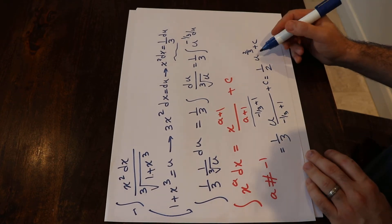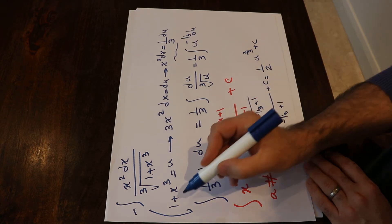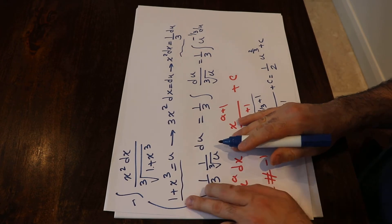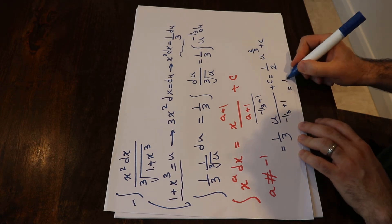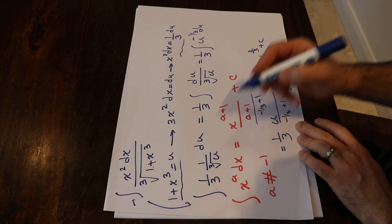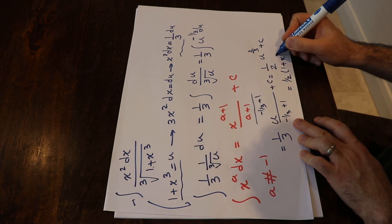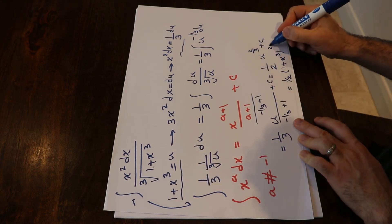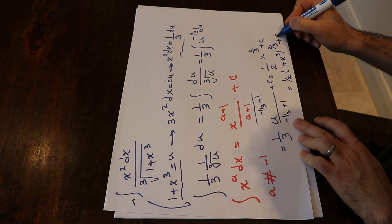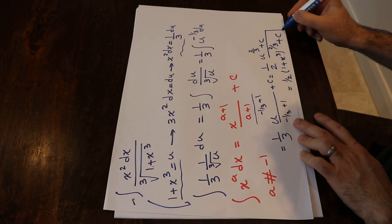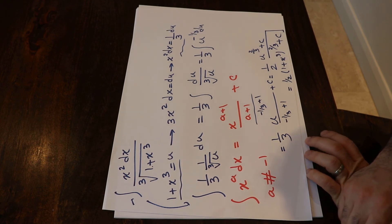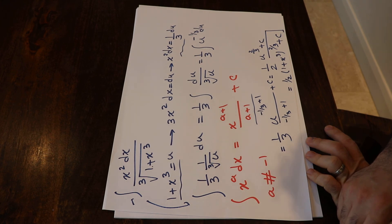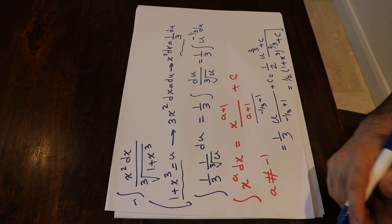All that remains is to substitute u back using the original definition, so the integral equals 1/2 times (1 plus x³) to the power of 2/3 plus C. That is the solution to this integral. I hope you found this video useful — I will upload more examples, so if you are interested please feel free to subscribe.